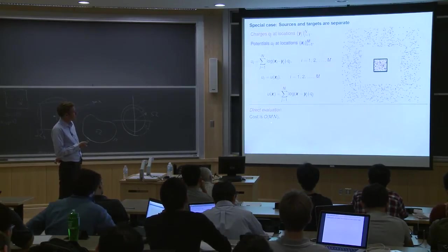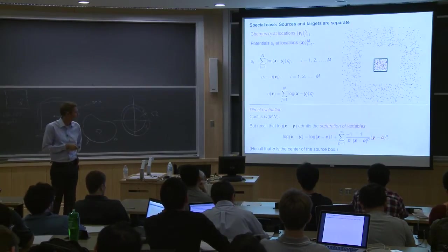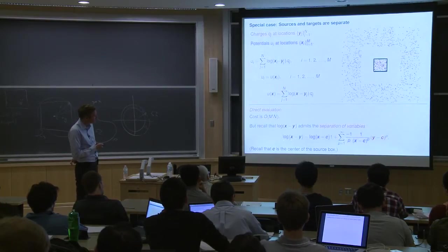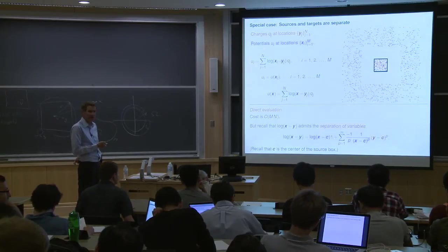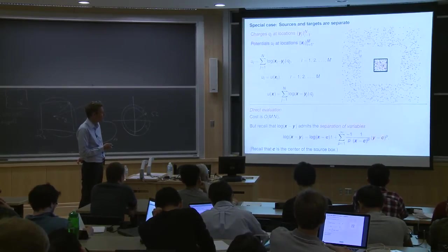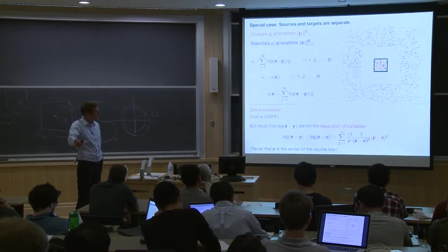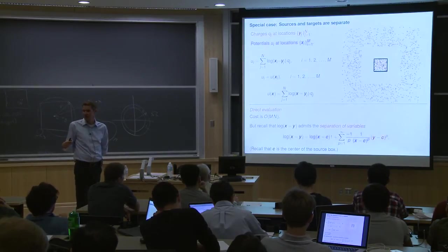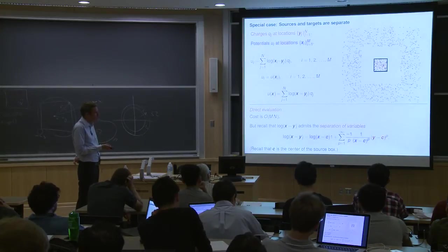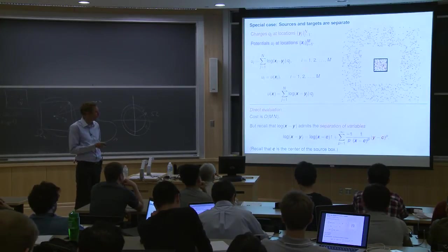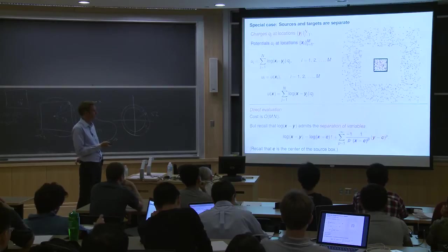In the previous lecture we derived a separation of variables. I can write the kernel log|x − y| as a series expansion where each term is a product of something that depends only on the target location — the blue factors — and something that depends only on the source locations — the red factors. These arise all over potential theory and are called separation of variables. For these to be useful, you need reasonably rapid convergence, and in this case we do have that.